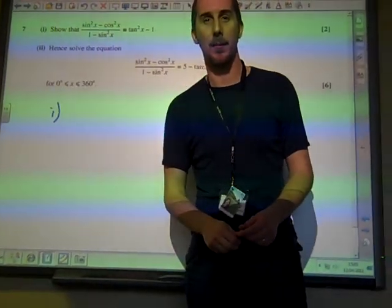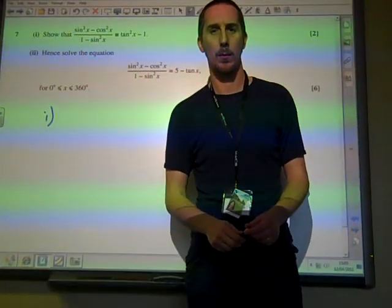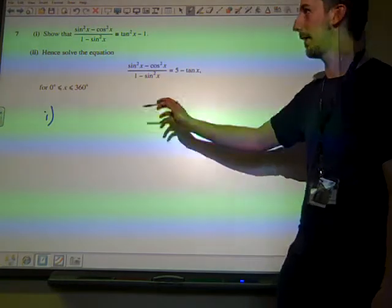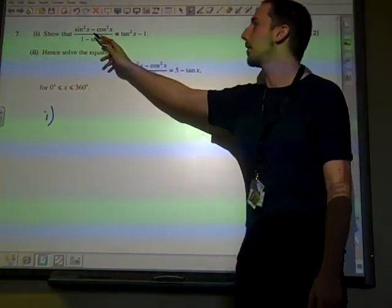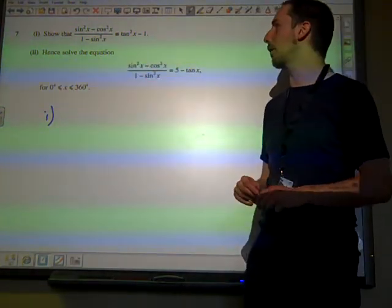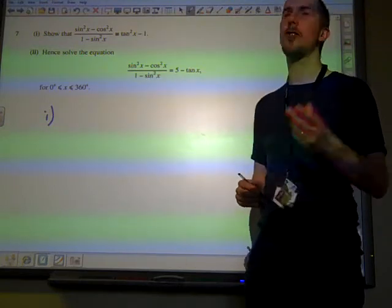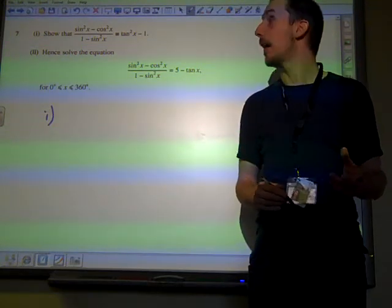Question 7, trigonometry still, and here we are. Sin squared x minus cos squared x over 1 minus sin squared x. You've got to show that it's equal to tan squared x minus 1.